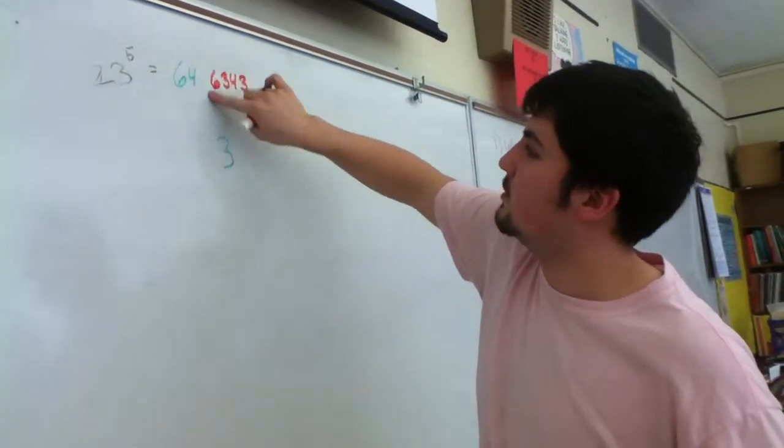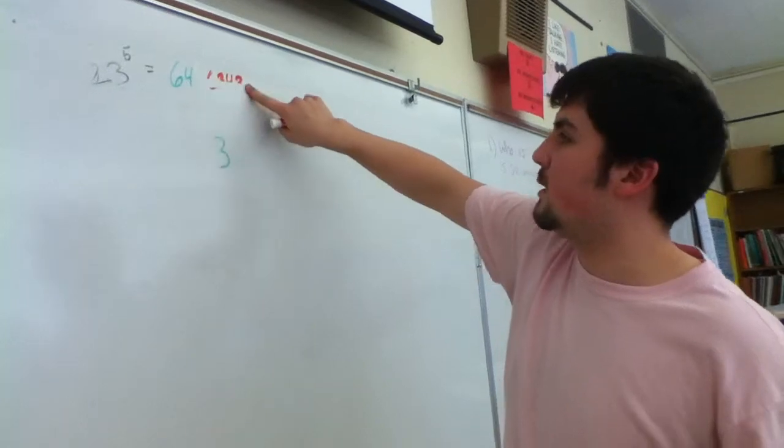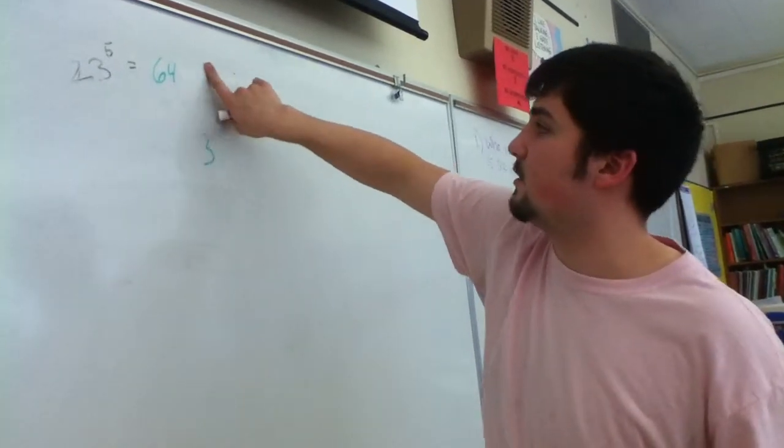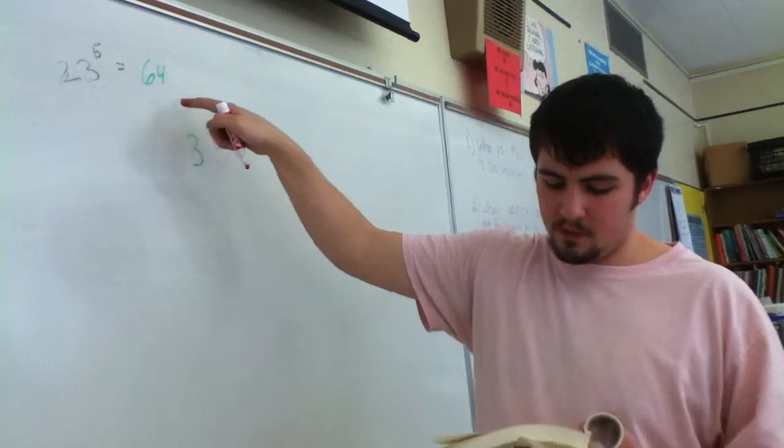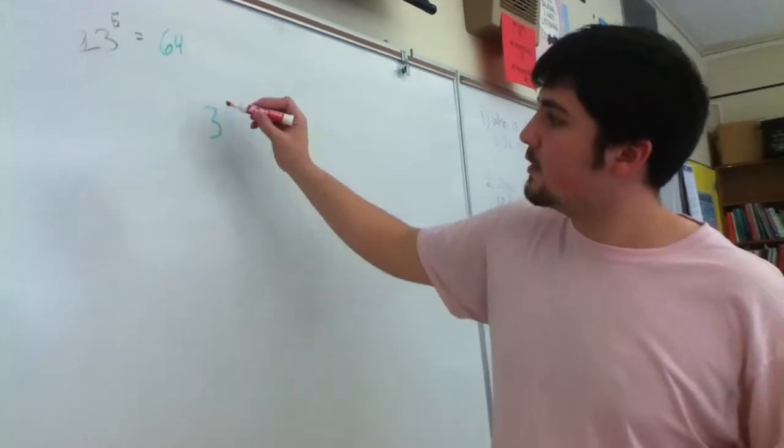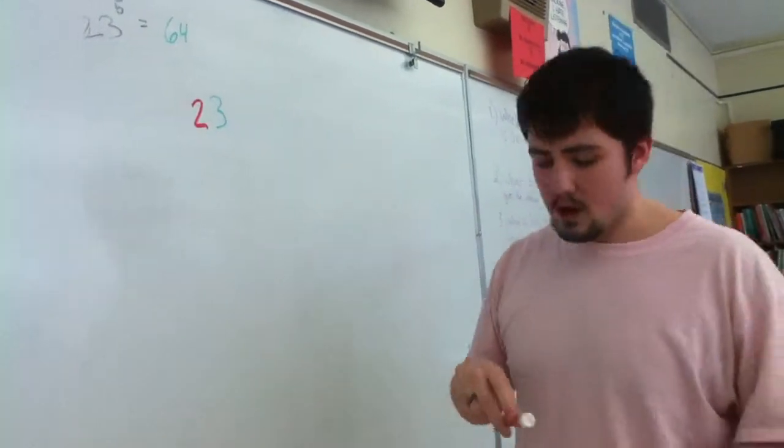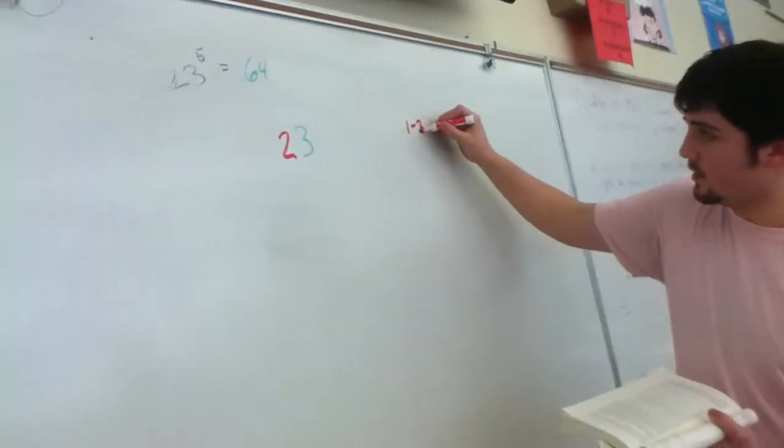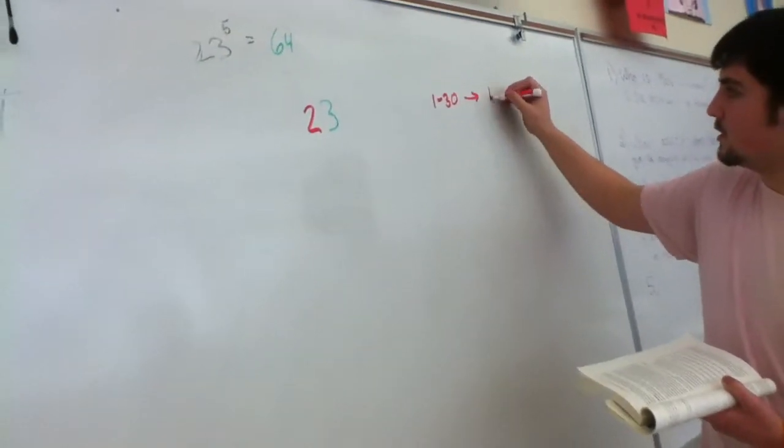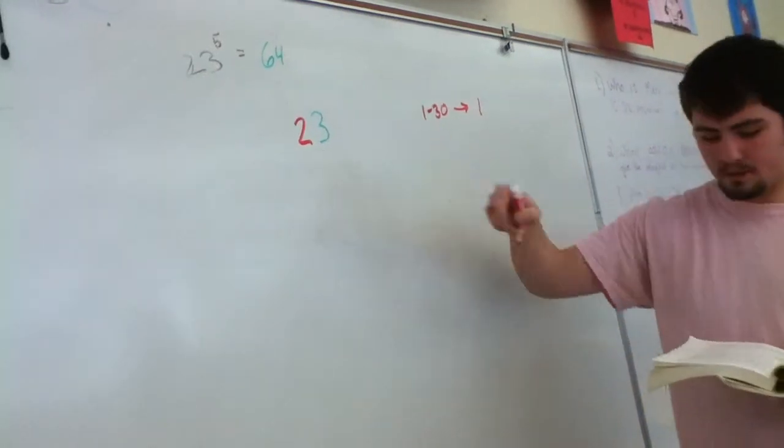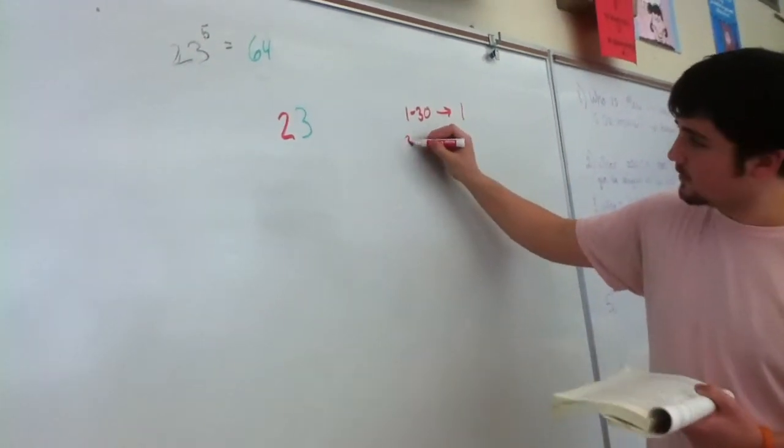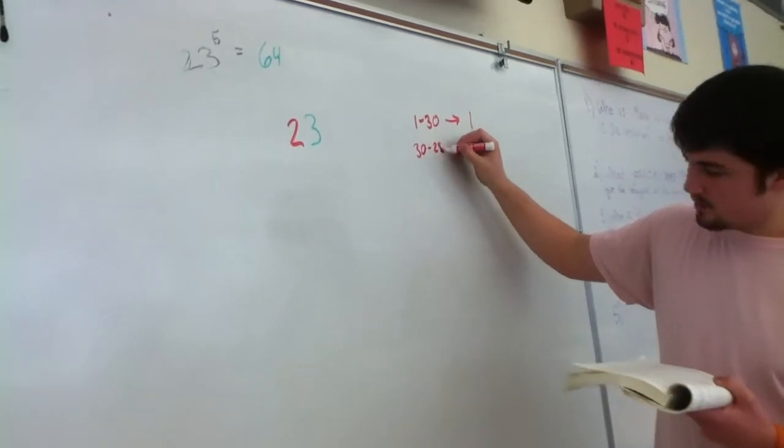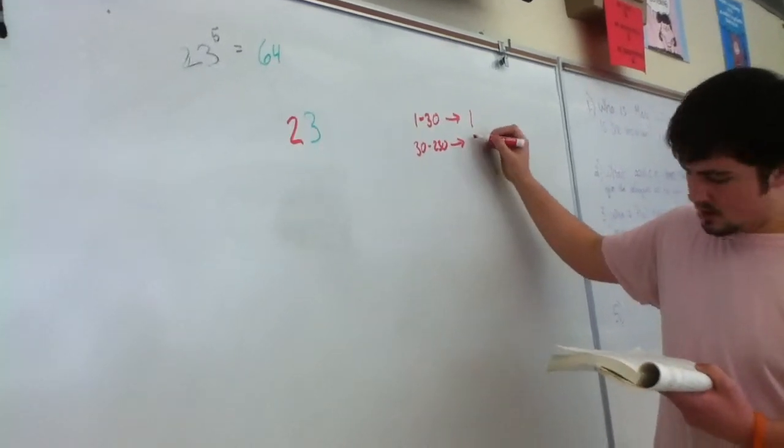So then you would erase the ones digit plus four places, so five places. This number is between 30 and 230, so the answer is 23.